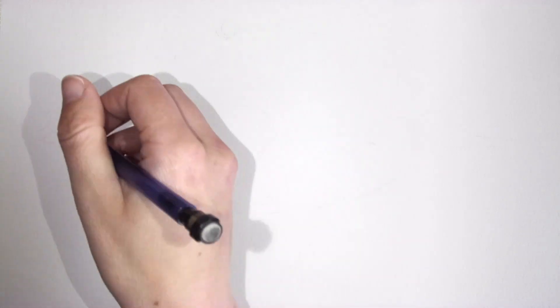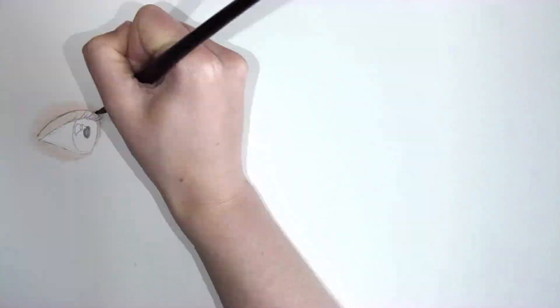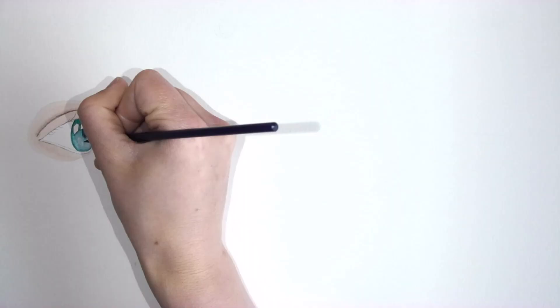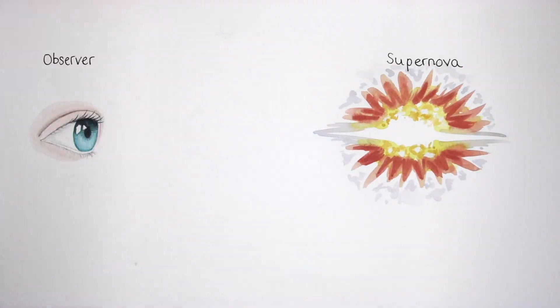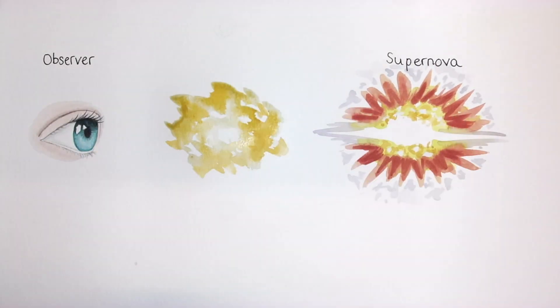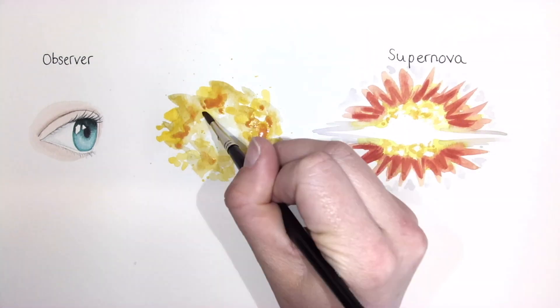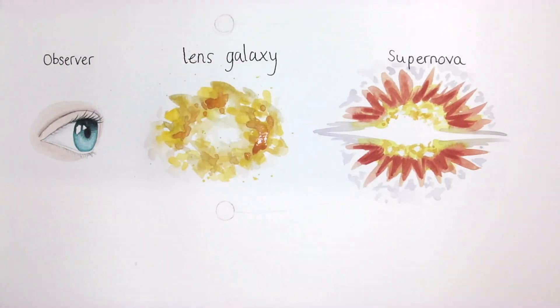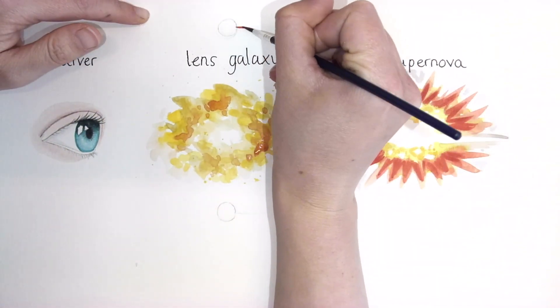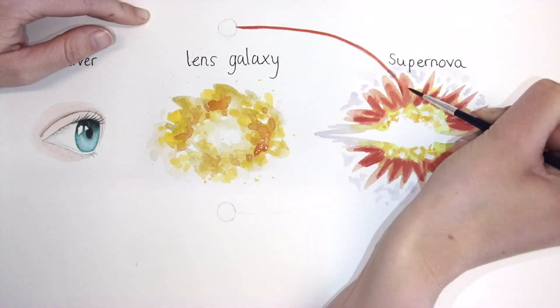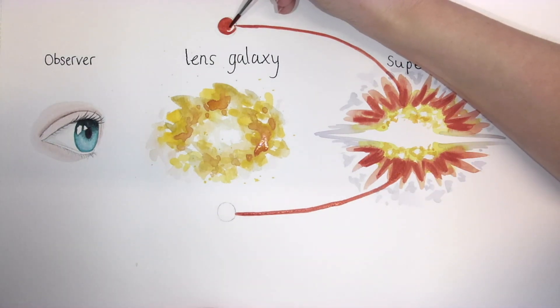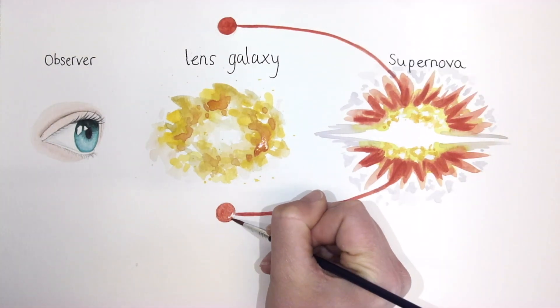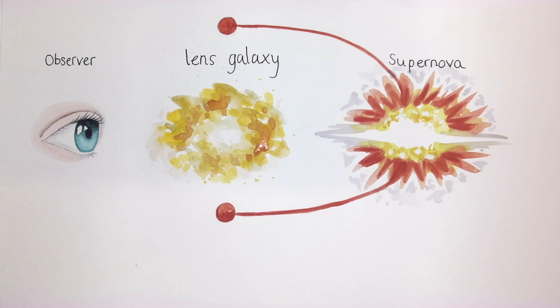The four dots of Supernova Zwicky are created by a remarkable phenomenon called gravitational lensing. When we observe a distant object, such as a supernova explosion, a galaxy can be positioned between us and the supernova and act as a gravitational lens. Massive galaxies are able to bend and magnify light rays from the supernova, causing the light to travel in multiple paths around the lens galaxy. As a result, we can see multiple images of the same event.